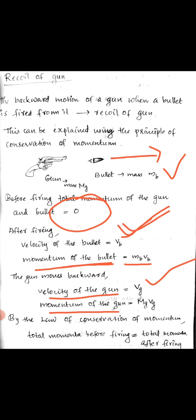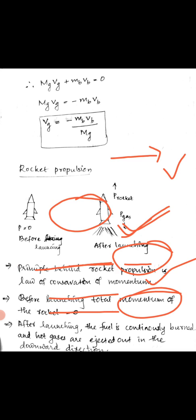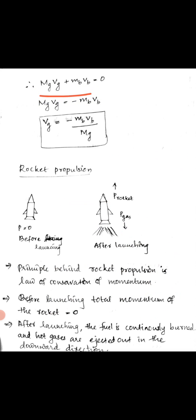By the law of conservation of momentum, total momentum before firing equals total momentum after firing. Before firing it is zero, so after firing: MG·VG plus MB·VB equals zero. Therefore MG·VG equals minus MB·VB, and the recoil velocity is VG equals minus MB·VB divided by MG.